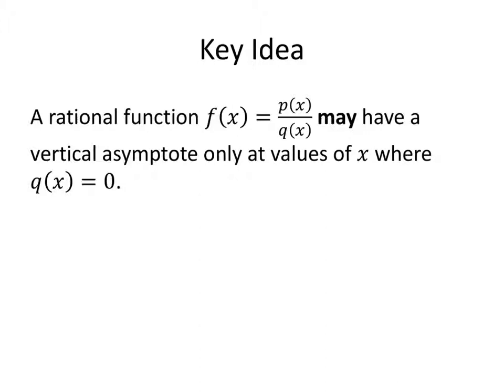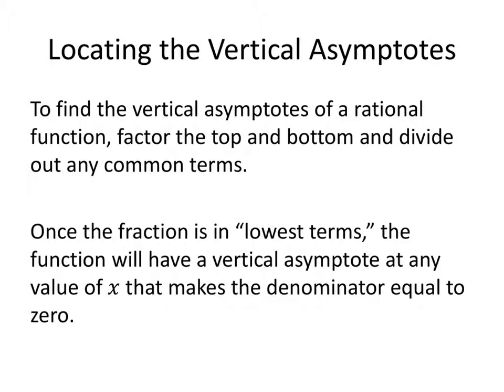Unfortunately, just knowing that the denominator equals 0 is not a guarantee that you'll actually get a vertical asymptote. To find the vertical asymptotes, what we need to do is factor the top and bottom of that rational function and divide out any common terms. Once we do that, any remaining values of x that make the denominator equal to 0 will have vertical asymptotes there, but anything that divided out won't necessarily have vertical asymptotes.